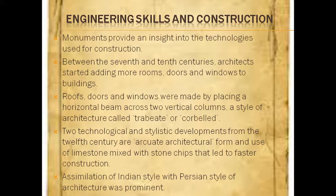Let's start with the first topic: engineering skills and construction. Monuments provide an insight into the technologies used for construction. Between the seventh and tenth centuries, architects started adding more rooms, doors, and windows to buildings. Roofs, doors, and windows were made by placing a horizontal beam across two vertical columns — a style of architecture called trabeate or corbelled.